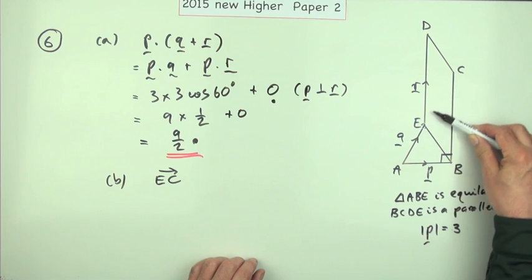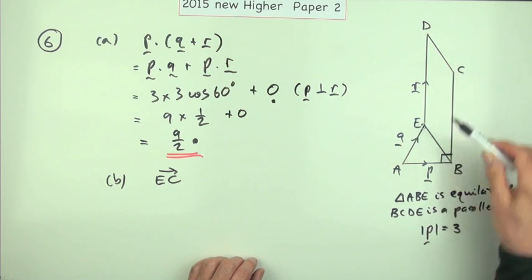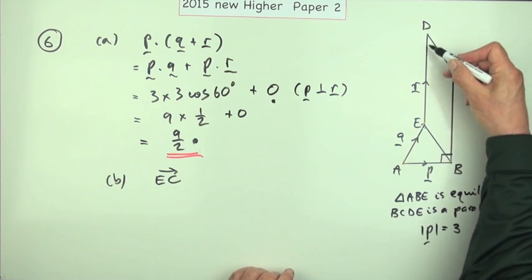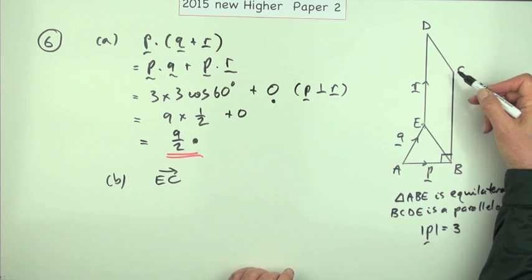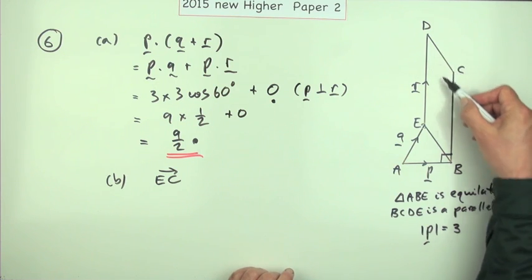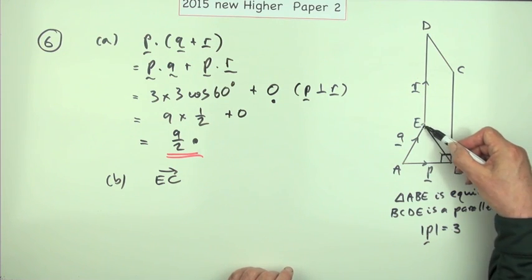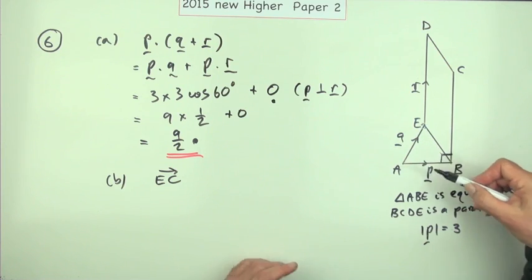That's that diagonal there in the middle of that parallelogram. Well the way you go from E to C is you follow paths that you know. You could go up to D and then down from D to C, and they say well I don't know DC but it'll be the same as EB. You think well I don't know EB but that'll be equivalent to going down to A and back.